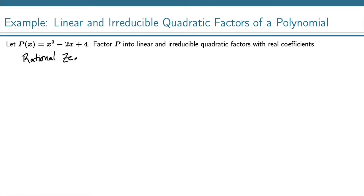The Rational Zeros Theorem tells us to look at the factors of the constant term and divide by factors of the leading coefficient, which in this case is 1. So the factors of 4 divided by factors of 1.